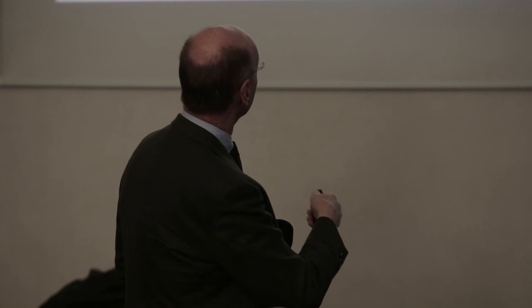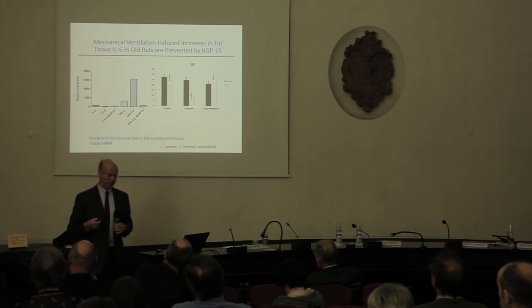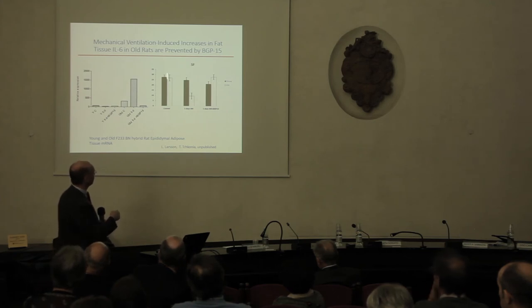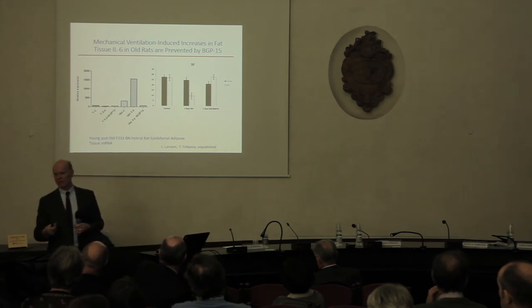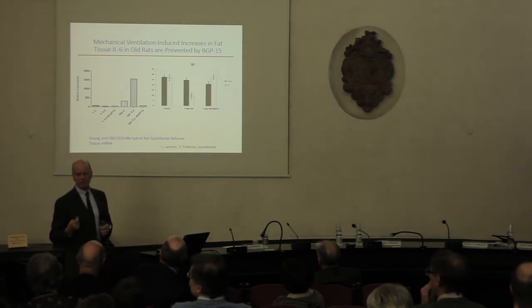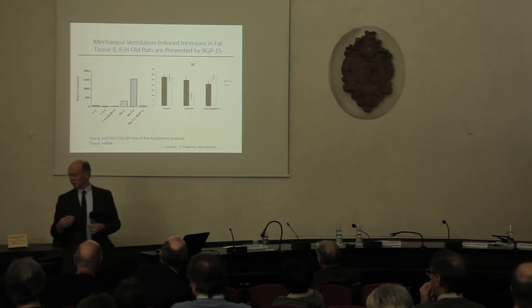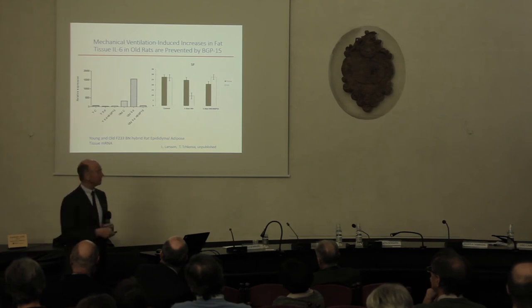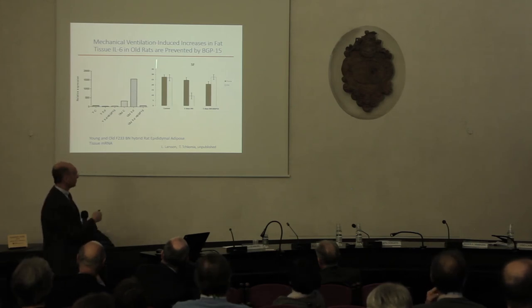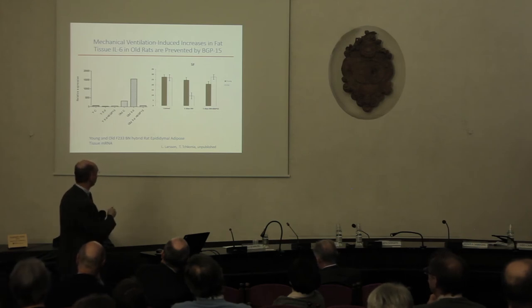Others have shown that the JAK-STAT pathway is upregulated in response to ICU conditions, and one trigger for this pathway is IL-6. Using Fisher 344 Brown Norway hybrid rats, in five days the young animals show no loss in function, but old animals show a dramatic loss in function. When we look at IL-6 production in adipocytes, it goes up dramatically in response to mechanical ventilation but is almost normalized with BGP-15. The loss in function is also restored almost completely with BGP-15, linked to the reduction in JAK-STAT activation via IL-6.